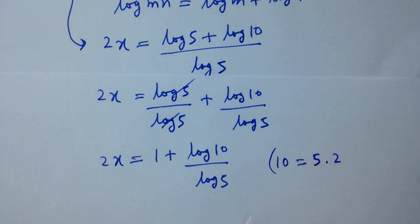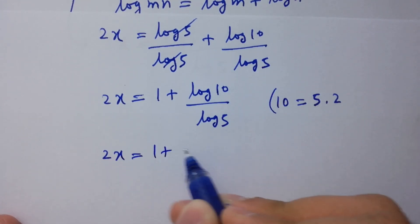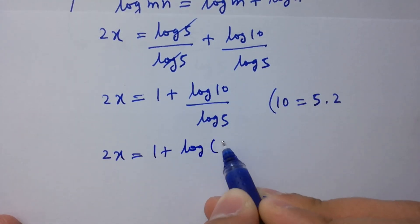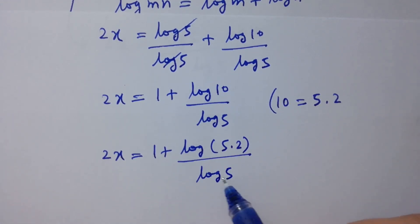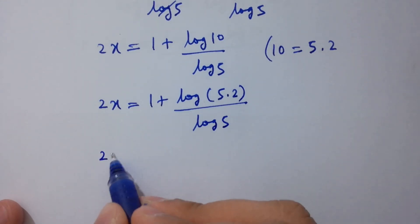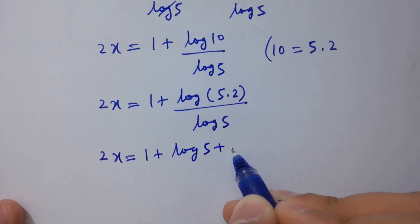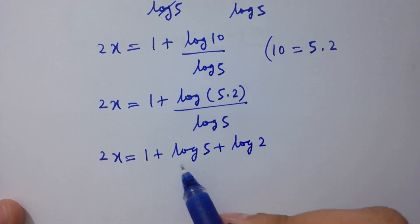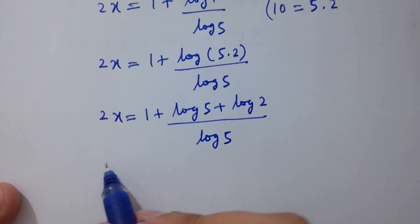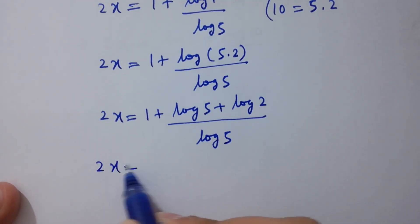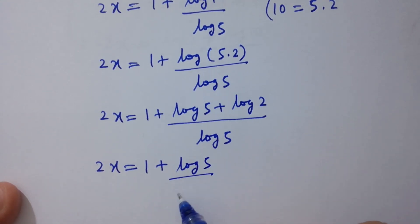As 10 equals 5 times 2, we have 2x equals 1 plus log(5 times 2) over log 5. Using the product rule, this becomes 2x equals 1 plus (log 5 plus log 2) over log 5.